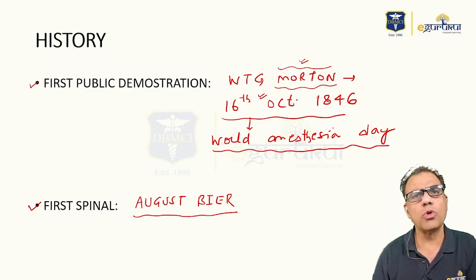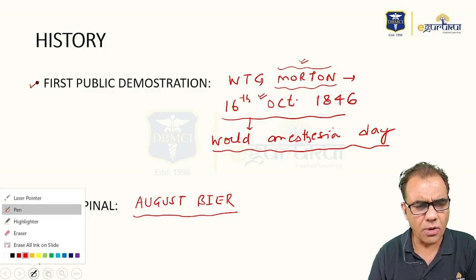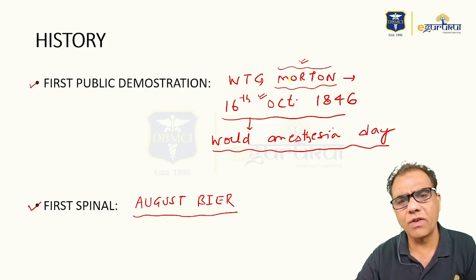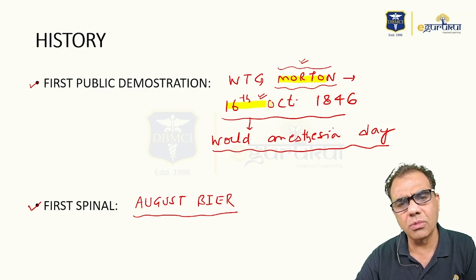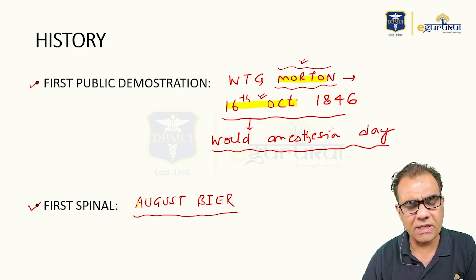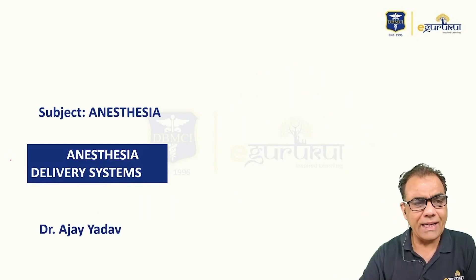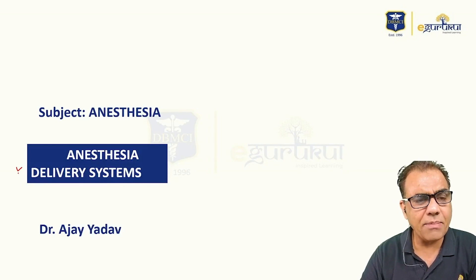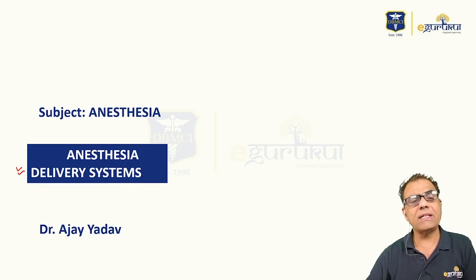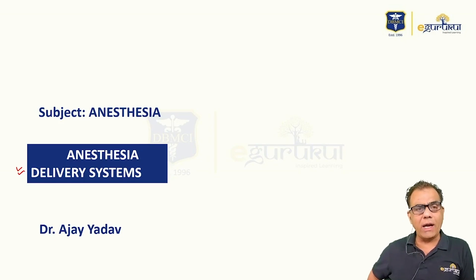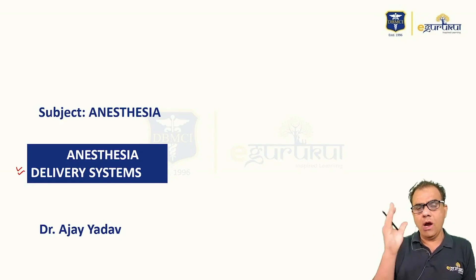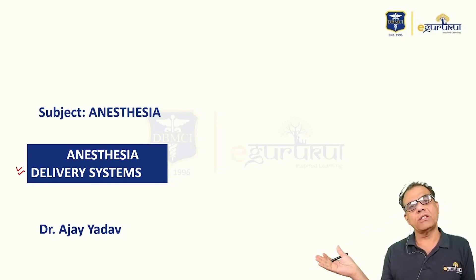These are the two most important things in history: first public demonstration of anesthesia by Morton on 16th October, and first spinal anesthesia by August Bier. Then — anesthesia delivery systems. As the name suggests, anesthesia delivery systems are those required to deliver anesthesia to the patient.